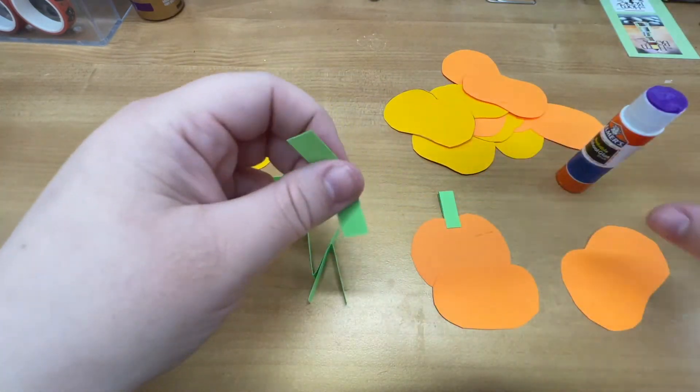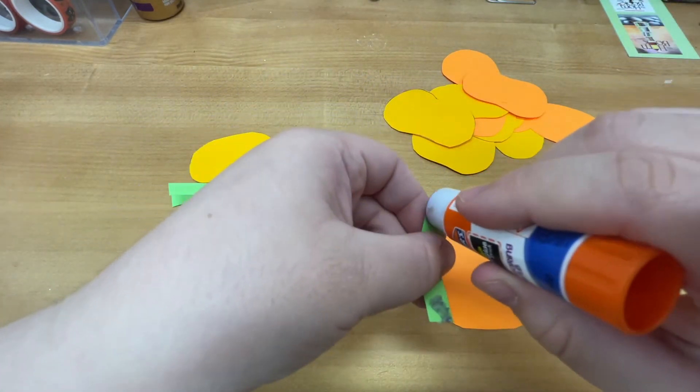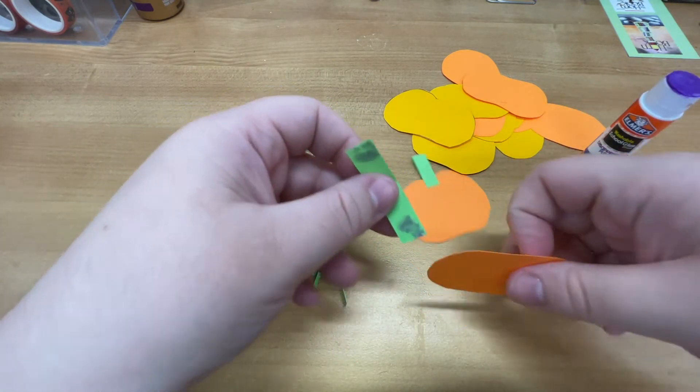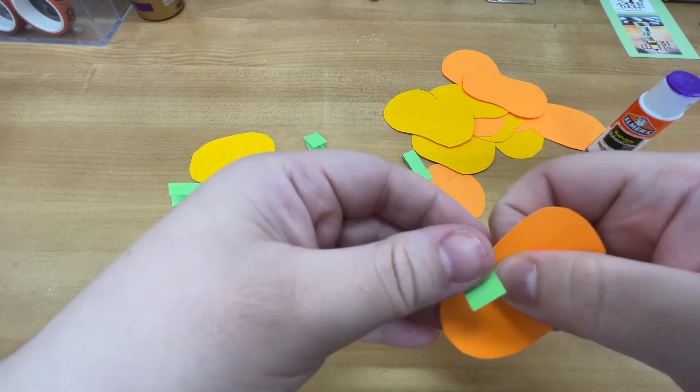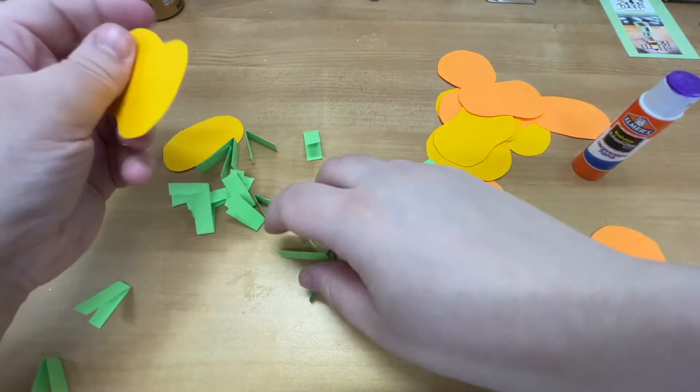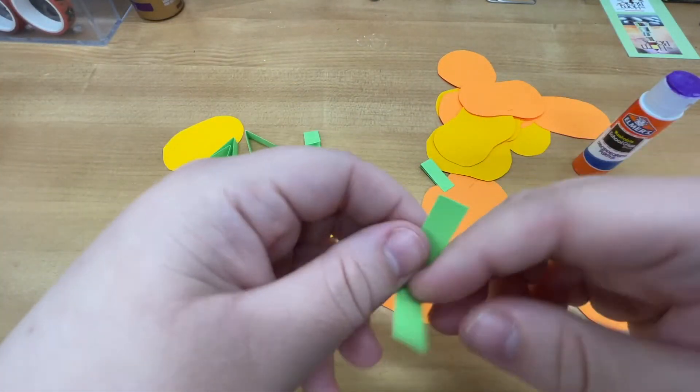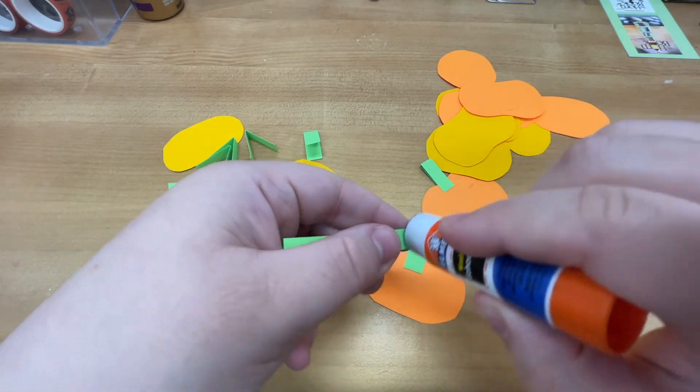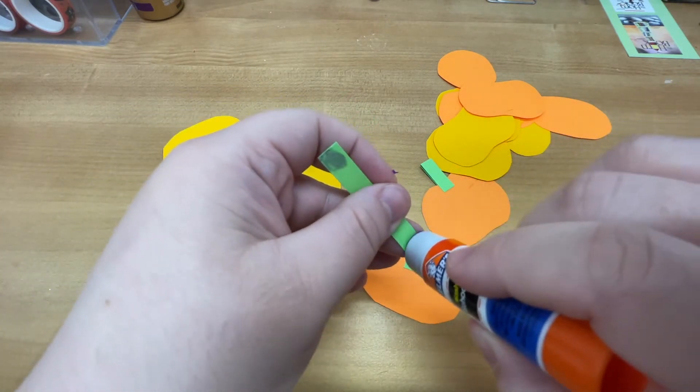And kind of rinse and repeat that. So for each pumpkin, I'm going to put a little bit of glue on the sides. And this is the beginnings of your garland. This is going to take quite a bit. So I'm going to do this last one and then I'm going to do the rest off camera.